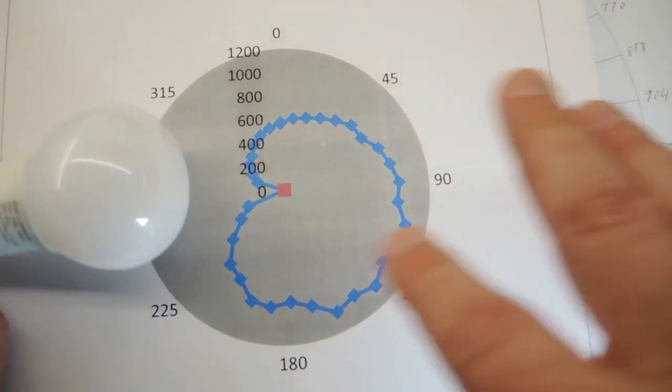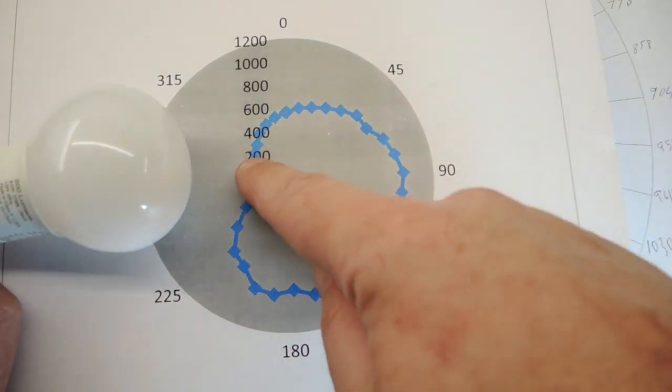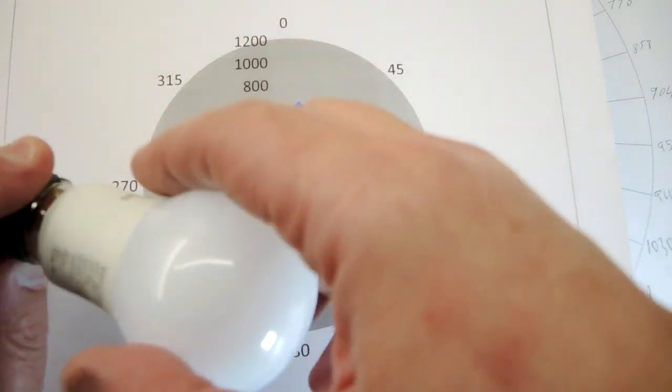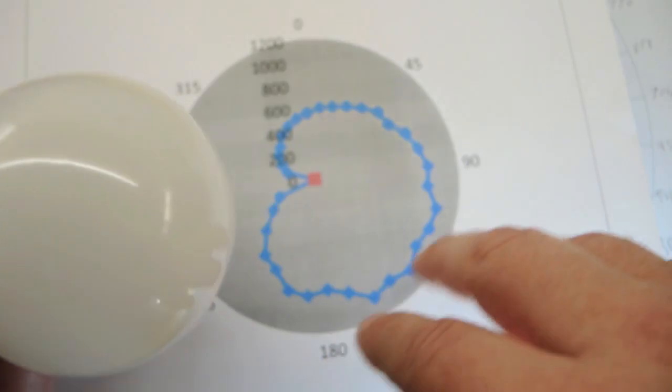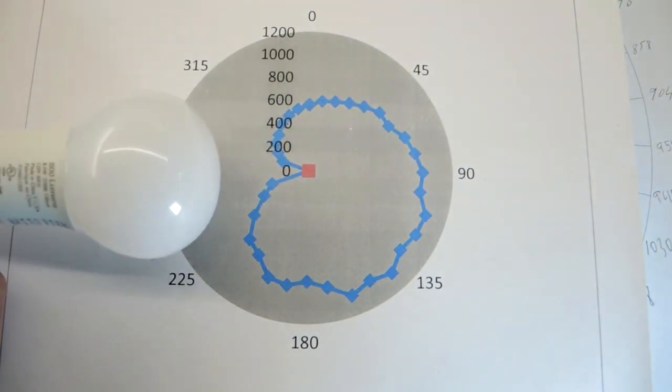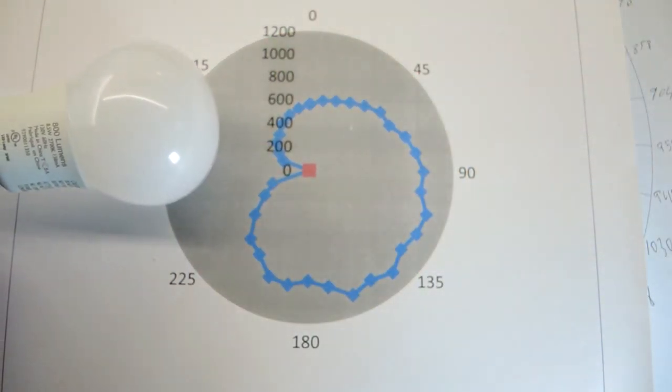This is the light distribution pattern, obviously firing downwards also there's side lobes which is good. There's an asymmetry to the bulb, not sure if that's because the bulb rotated while I was measuring it or if there's some sort of asymmetry in the way the LEDs glow out. But this is actually a pretty good pattern, certainly for the cheapest LED bulb I've ever torn down. When I was expecting essentially just a floodlight, this is a decent pattern.